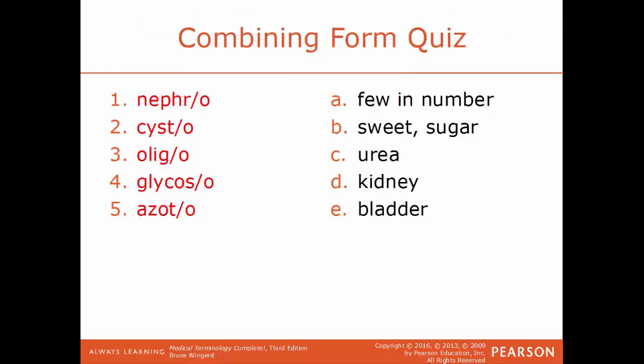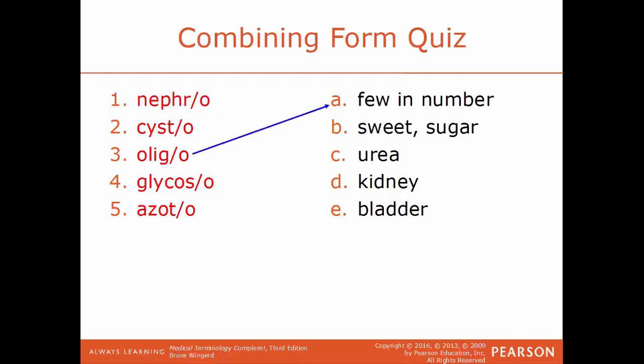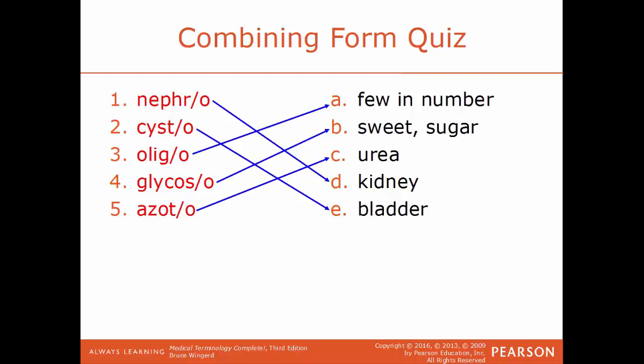We'll end the chapter with a combining form quiz. Terms on the left — nephro, cysto, oligo, glycoso, and azato — match with either: a few in number, sweet or sugar, urea, kidney, or bladder. Nephro goes to kidney; cysto goes to bladder; oligo goes to a few in number; glycoso goes to sweet or sugar; and azato goes to urea. Here are all five terms correctly matched to their definitions.